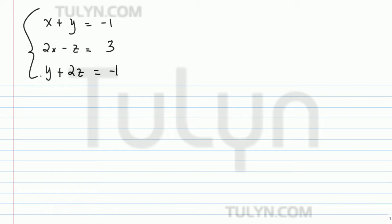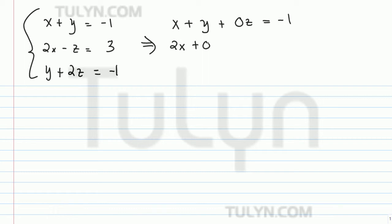Generally, I want you to note that this system, although it has three variables, not all three variables are present in each equation. So it helps to rewrite the system like this: x plus y plus 0z equals negative 1; 2x plus 0y minus z equals 3; and 0x plus y plus 2z equals negative 1. Note I didn't change the equations because 0 times anything is 0.